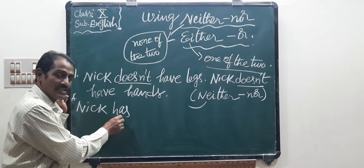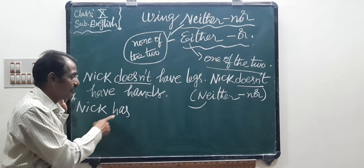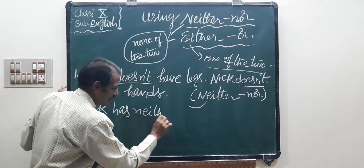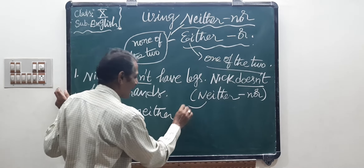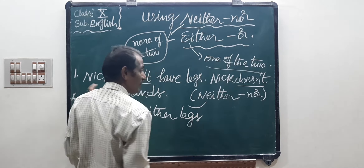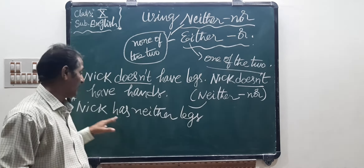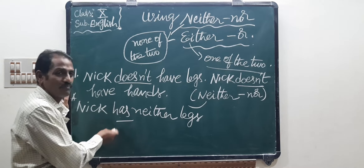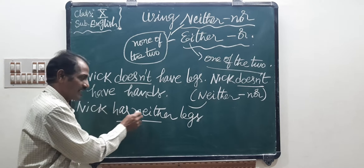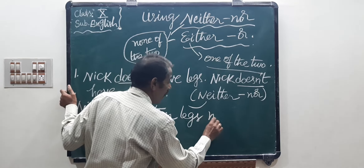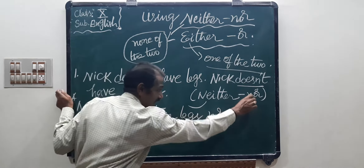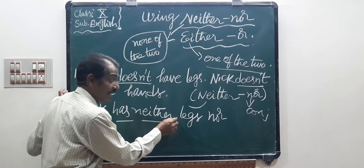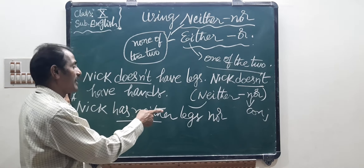The answer is: Nick has neither. Because Nick is third person singular, we use 'has.' So: Nick has neither legs. 'Nor' is the conjunction. So: Nick has neither legs nor his hands.